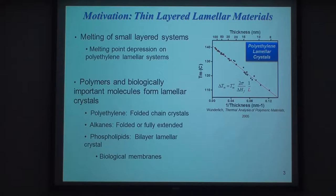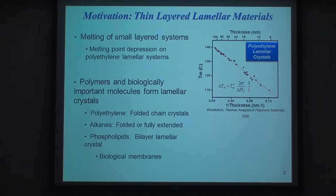So what is our motivation? Our motivation to study very thin layered materials comes from the thermodynamics of materials at the nanoscale, which exhibit starkly different properties compared to bulk materials. As an example of a small layered system, a typical example would be polyethylene, where there is a big melting point depression dependent on the thickness of the lamella. Polyethylene forms these layered thin sheets of material, and people found that melting point depends on how thick the layers are.